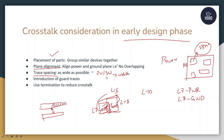The fourth point is the introduction of guard traces. Guard traces are basically ground plane traces put between the two transmission lines that are experiencing crosstalk. For example, between TL1 and TL2, a third transmission line connected to ground is introduced. What this does is absorb the extra electric and magnetic field that was previously intersecting between both transmission lines, preventing them from coupling with each other.